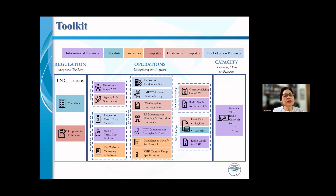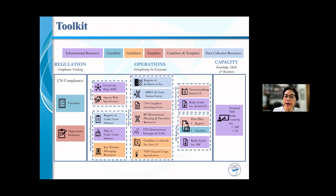The gap analysis shows gaps in compliance with UN conventions and recommendations, gaps in the ecosystem, gaps in the regulatory environment, gaps in the policy environment, gaps in operations, and gaps in capacity. Our toolkit comprises, under regulation, UN compliance tools, checklists, and opportunity estimators; and under operations, many different artifacts including ecosystem maps, agency role specifications, a register of Caribbean coast stations, a map of Caribbean coast stations, key website messaging resources, a register of incidents at sea, MRCC and coast station surveys, UN-compliant licensing forms, RF measurement planning and execution resources, Trinidad and Tobago measurement strategies and tools, guidelines to specify sea area A1, and VHF channel usage specifications.